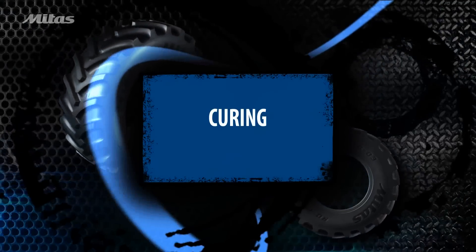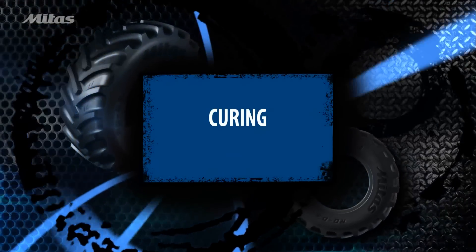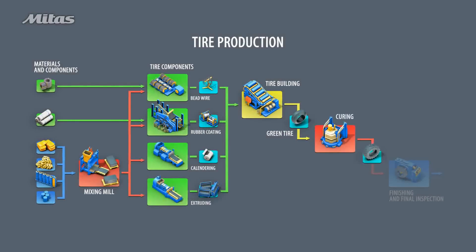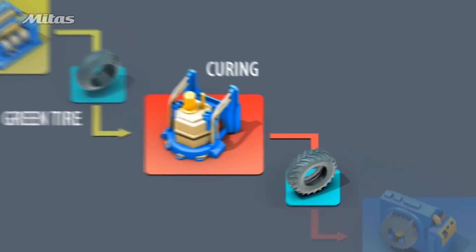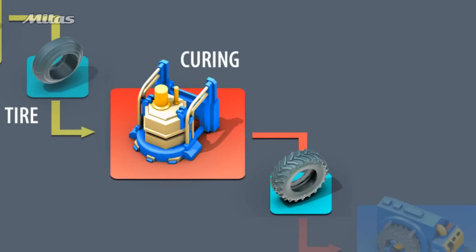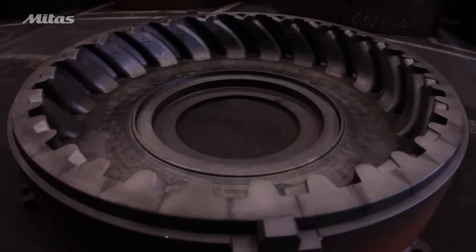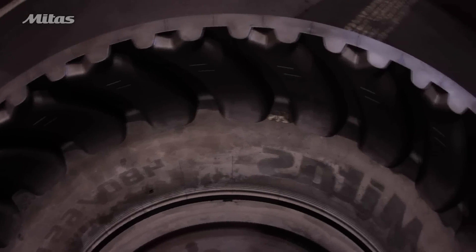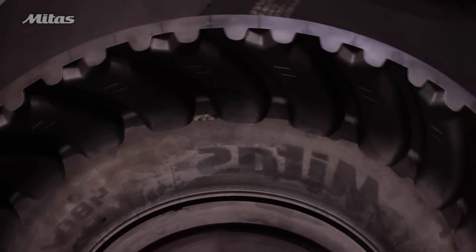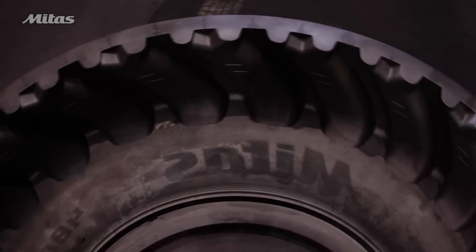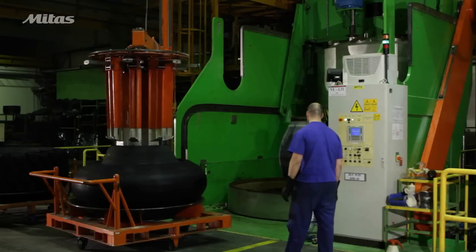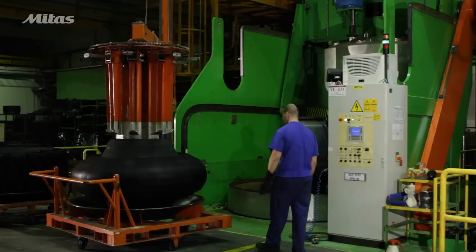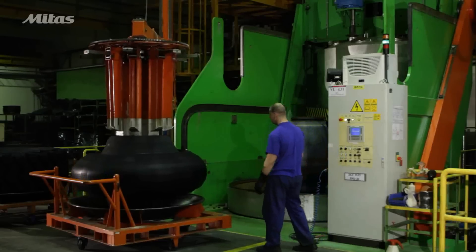After tire building, green tires are cured in a process called vulcanization, in which the tire achieves its final shape and characteristics. This is a tire mold. Prior to curing, the green tire is covered with a solution that helps it fill the mold. The green tire is then placed in the curing press.